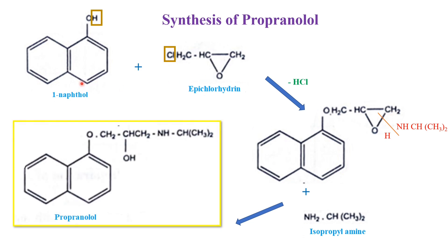So, how are we getting propranolol? 1-naphthol is treated with epichlorohydrin, HCl is removed, and the epoxide group is added. Then, isopropylamine is added and we get propranolol. That is all about the synthesis of propranolol.